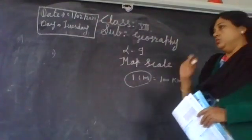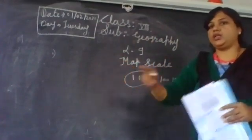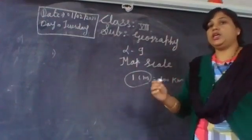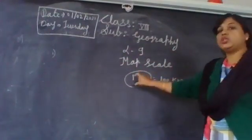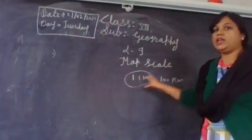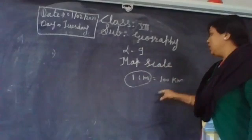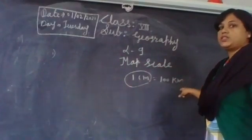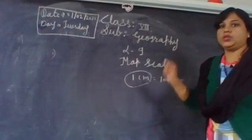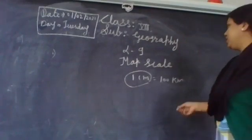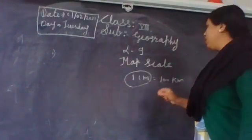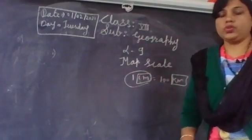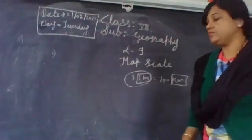If you have to show a five kilometer area, you cannot make a paper of five kilometers. So this is called the map scale. In case of verbal scale, we use words. That kind of scale is called the verbal scale.